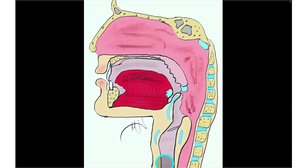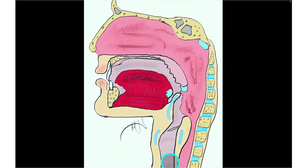The trachea is also lined with ciliated pseudostratified columnar epithelial tissue with goblet cells. Debris is trapped within the mucus secreted by the goblet cells, and the cilia sweep that mucus with any debris or pathogens superiorly, up and out of the trachea and larynx, dropping it into the esophagus where stomach enzymes break it down. This respiratory epithelium within the trachea is known as the mucociliary escalator. That's it for the conducting division of the respiratory system; we'll talk more about the serous membranes of the lungs in the next video.